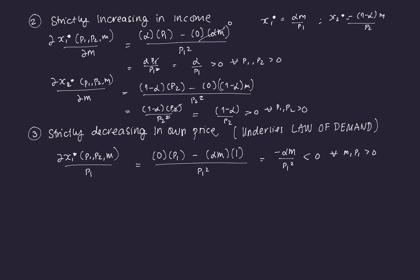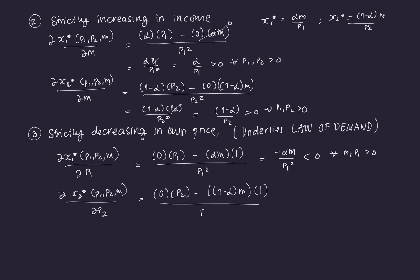The same is true for good two. Taking ∂X2*/∂P2: (0·P2 − (1−α)M·1) / P2² = −(1−α)M/P2², which is less than 0 for all M, P2 > 0. This is another proof of the inverse relationship between price and demand. Those are some key properties of the Marshallian demand functions.